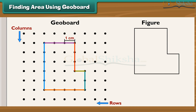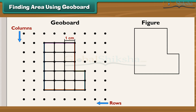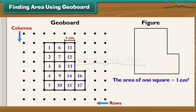Join the dots to create a closed figure. Then join all the dots inside the figure horizontally and vertically to form square blocks. Count all the square blocks — the area of each square block is one centimeter square. The area of the complete figure equals the number of square blocks multiplied by the area of one square block: seventeen into one, which equals seventeen centimeter square.